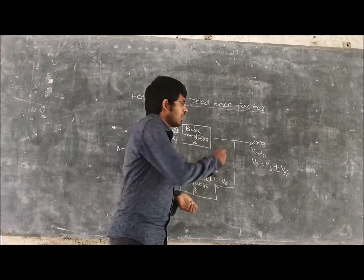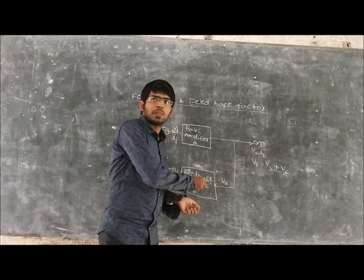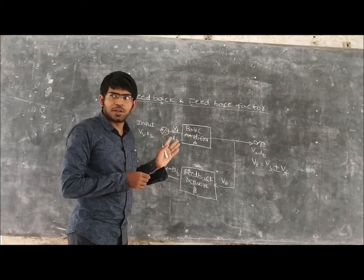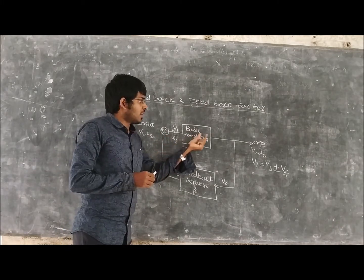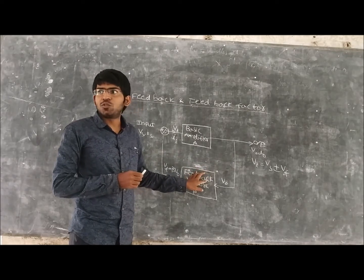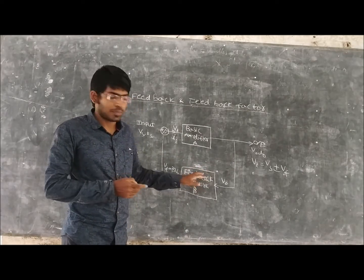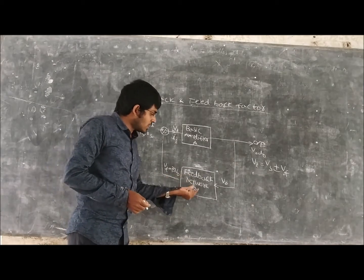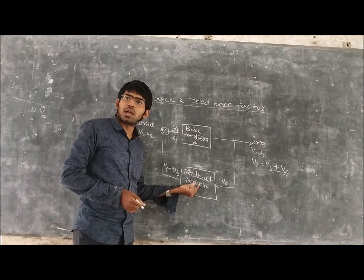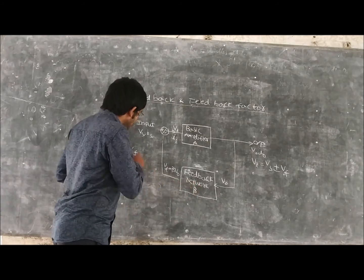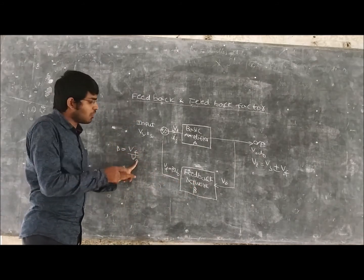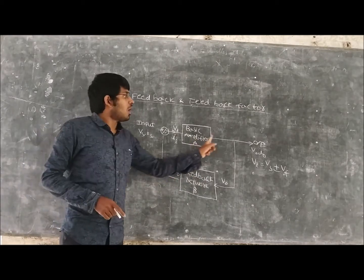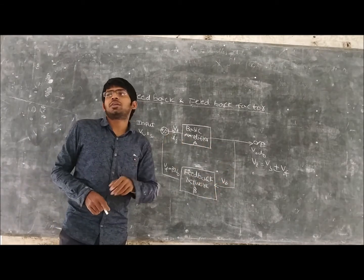The process of taking a fraction of output and feeding it back to the input signal is called feedback. The network we are using for this feedback is called the feedback network. And in this feedback network, we are using a factor called beta. This is the feedback factor. This feedback factor is nothing but the ratio of output of this feedback network to the output signal or input of the feedback network.